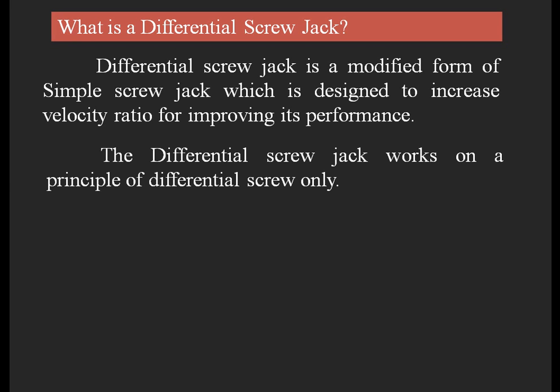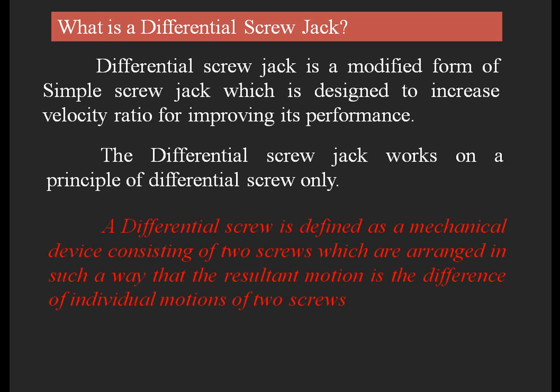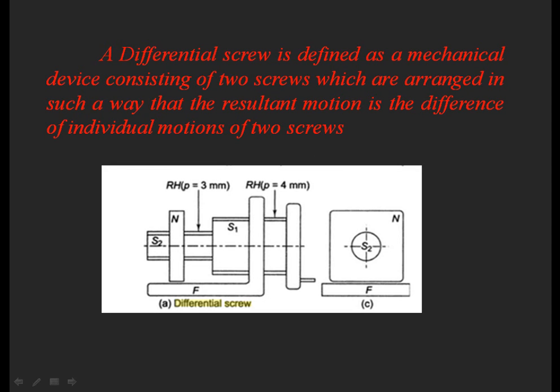The differential screw jack works on the principle of the differential screw. The differential screw is defined as a mechanical device consisting of two screws with two different pitches, arranged in such a way that the resultant motion is the difference of the individual motions of the two screws. The two screws with different pitches are arranged on the same shaft.